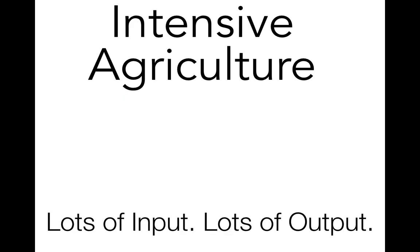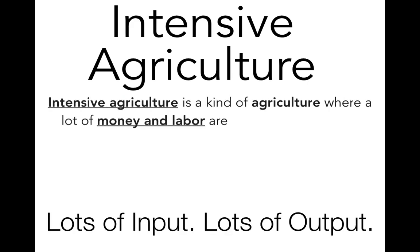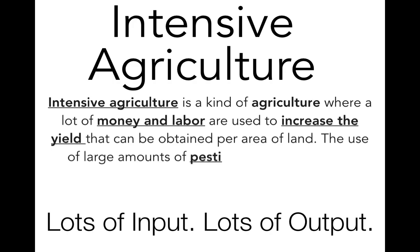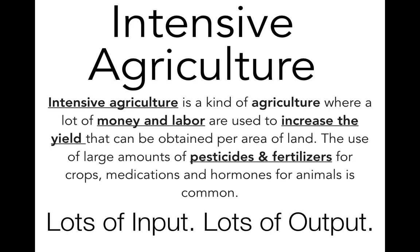In contrast, intensive agriculture is a kind of agriculture where a lot of money and labor are used to increase the yield that can be obtained per area of land. The use of large amounts of pesticides and fertilizer for crops, medications, and hormones for animals is also common. In other words, lots of input and lots of output.